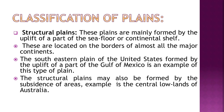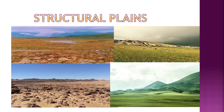Plains are classified into three types. Structural plains are mainly formed by the uplift of a part of the seafloor or continental shelf, located on the borders of major continents. The southeastern plain of the United States, formed by uplift of part of the Gulf of Mexico, is an example. Structural plains may also be formed by subsidence of an area, such as the central lowlands of Australia.